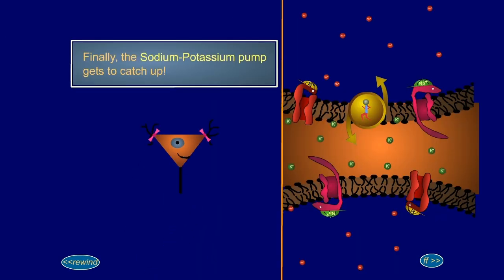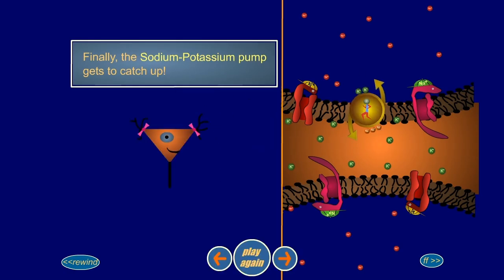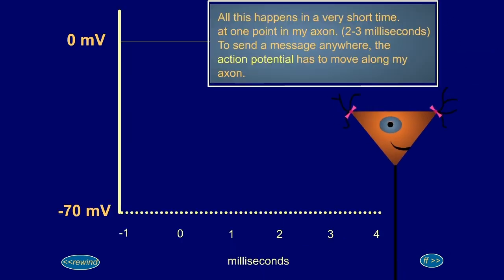Finally, the sodium-potassium pump gets to catch up. All this happens in a very short time at one point in my axon, two to three milliseconds. To send a message anywhere, the action potential has to move along my axon.